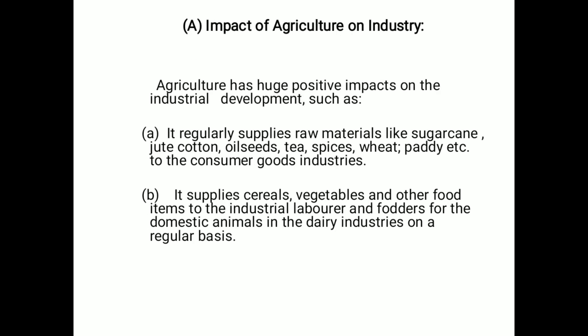The impact of agriculture on industry can be explained with various points. First, agriculture regularly supplies raw materials like sugarcane, jute, cotton, oil seeds, tea, spices, wheat, paddy, etc. to the consumer goods industries.